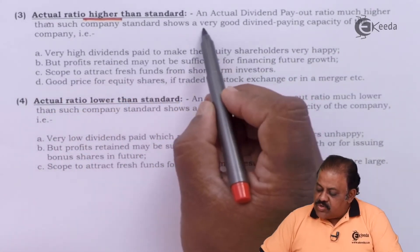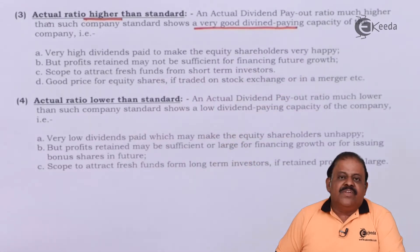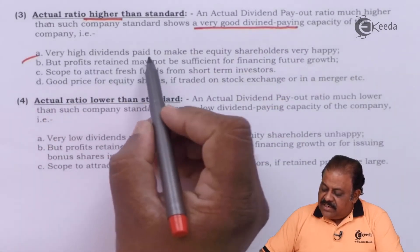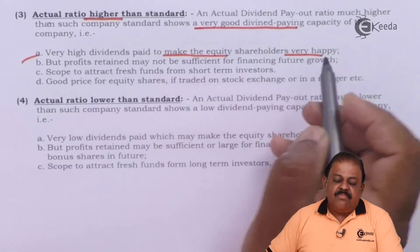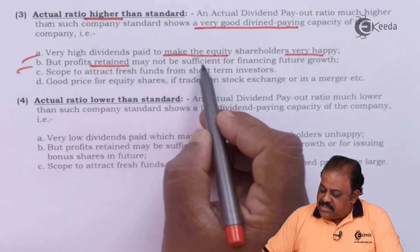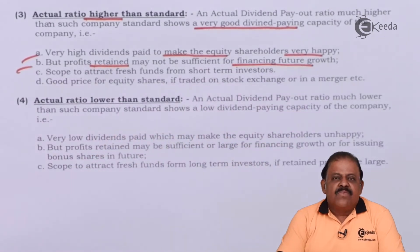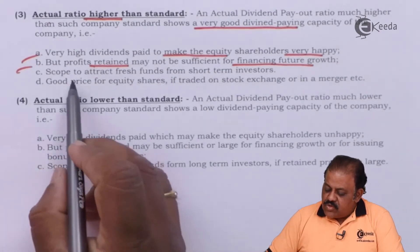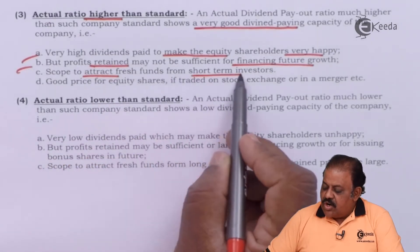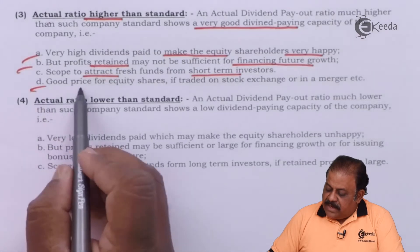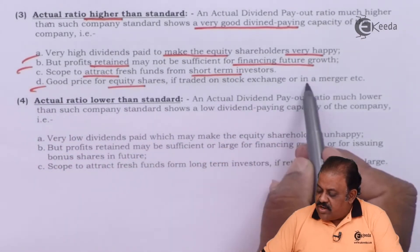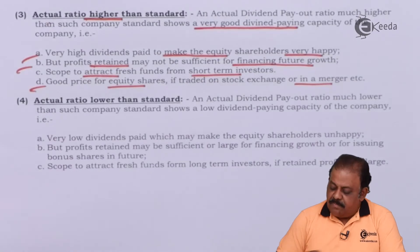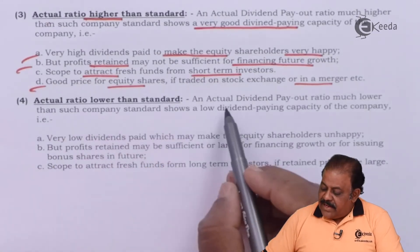An actual dividend payout ratio much higher than the company's standard shows a very high dividend paying capacity — very high dividend paid to make equity shareholders very happy. However, profits retained may not be sufficient for financing future growth, as the majority of available earnings are distributed as dividend, leaving less for transfer to reserves. There is scope to attract fresh funds from short-term investors, and a good price for equity shares if traded on a stock exchange or in case of merger.